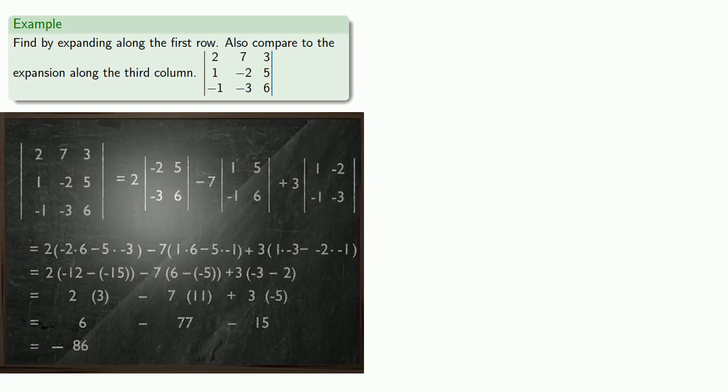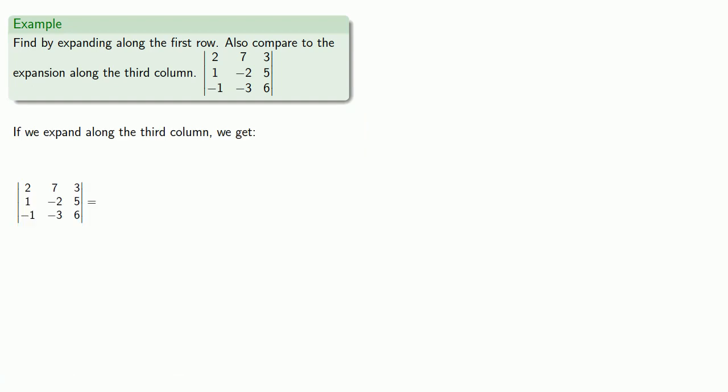And again, because we found the determinant by expanding along any row or column, maybe we expanded along the wrong one and got the wrong value. Well, let's check it out by expanding along the third column. So let's take a look at that.